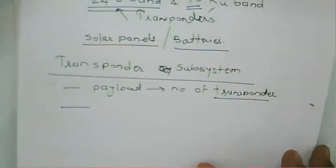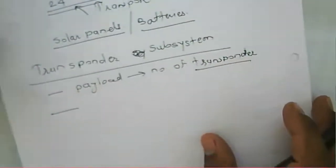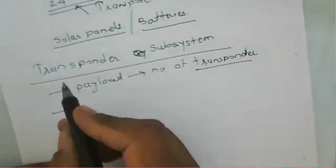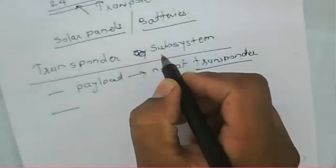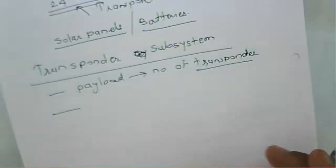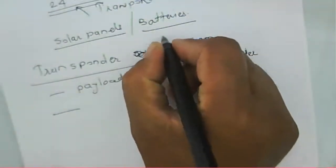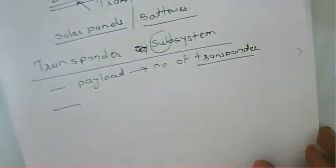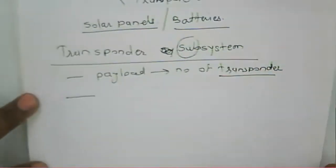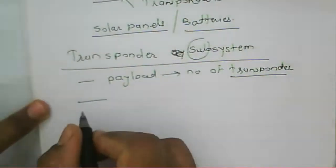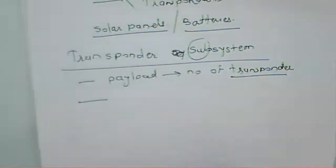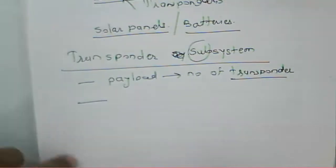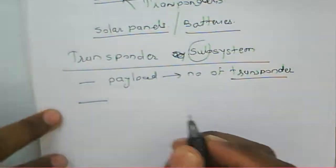We have learned this satellite configuration earlier. Today we start with the transponder subsystem, which has various components. It is called a subsystem because these are the sub-components of the main satellite configuration. This transponder is a major subsystem component for satellite communication.